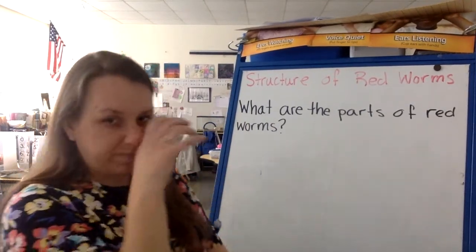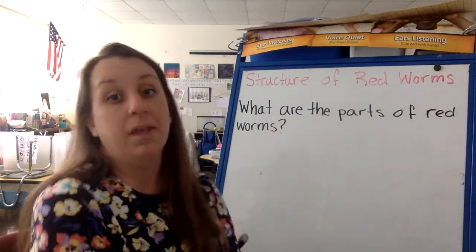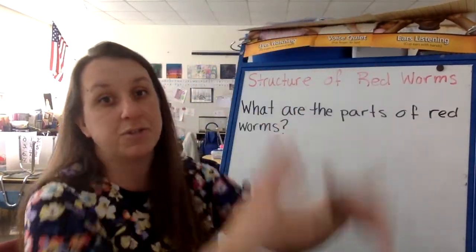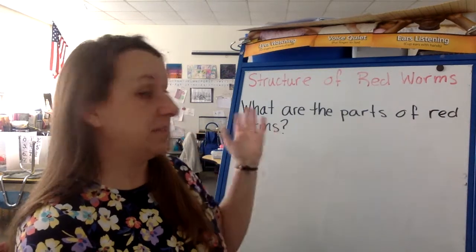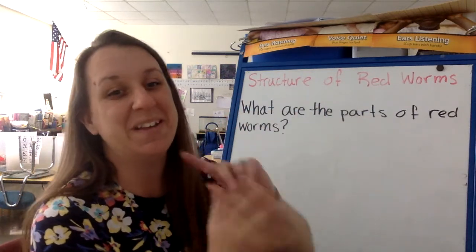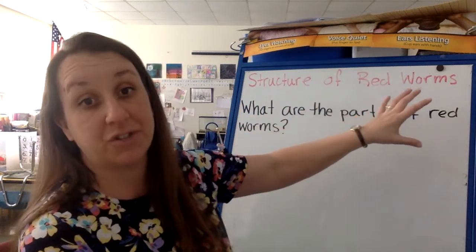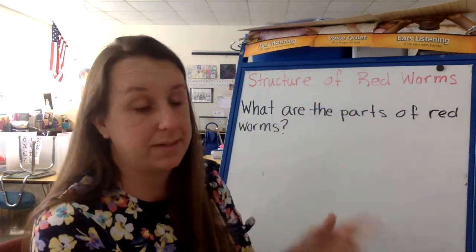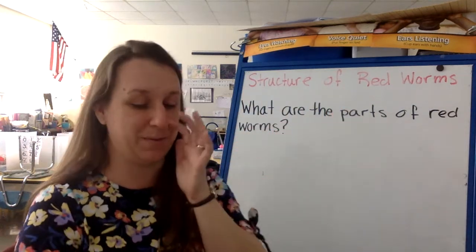So today we're learning about the structure of red worms. We've done the structure of fish, the structure of birds, the structure of beavers, the structure of trees, the structure of all kinds of things — even structure of paper, structure of wood, structure of fabric. Everything has a structure, and it has a structure for its purpose in this world. And so today we are going to learn the structure of red worms.